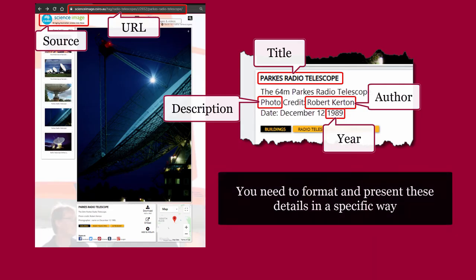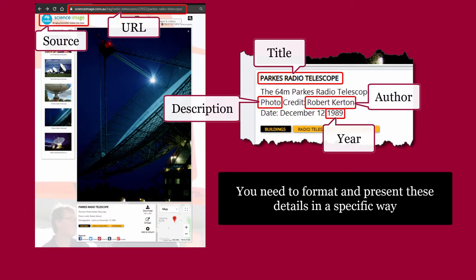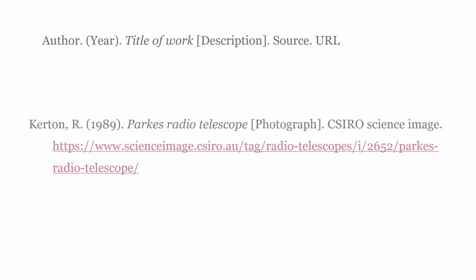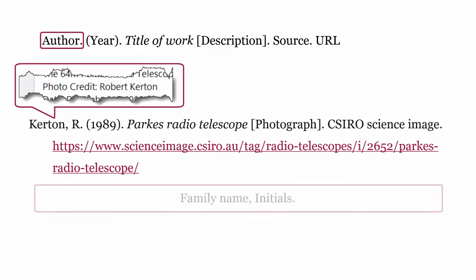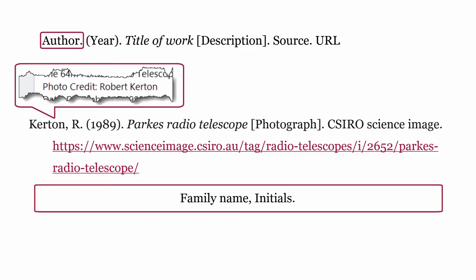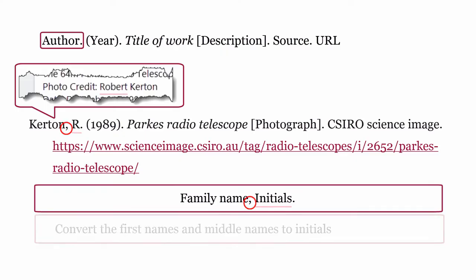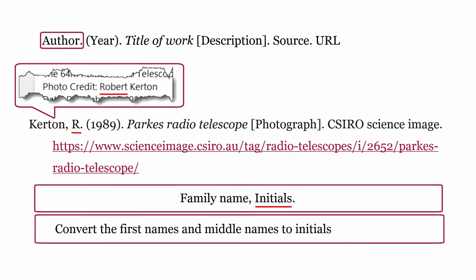You need to format and present these details in a specific way. For an online image, you need to put in the creator. So for a photograph, you would add the photographer. The author is formatted using the family name, comma, then convert the first names and middle names to initials and include a full stop after each initial.